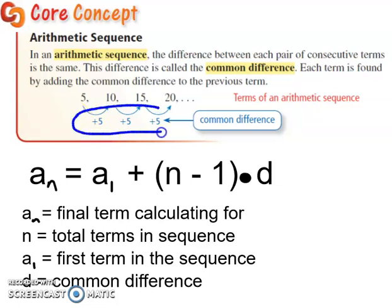So we can actually put this into a formula that's going to help us answer some more difficult questions. So the formula is a_n is equal to a_1 plus (n minus 1) times d. And you're probably like, whoa, that's a lot of variables in there, right?